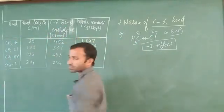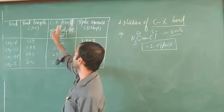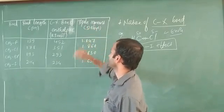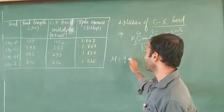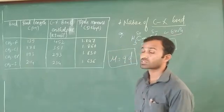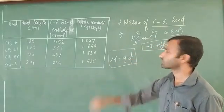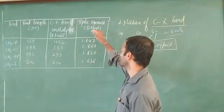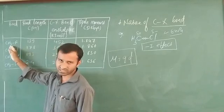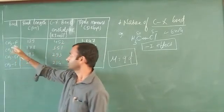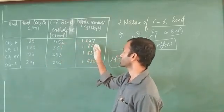Now let's look at the tabular column. The first column is the bond, the second is bond length in picometers (pm, which is 10⁻¹² meters), the third is bond enthalpy in kJ/mol, and the fourth is dipole moment (μ = q × d, the product of charge and distance). For CH3F (fluoromethane, common name methyl fluoride), the bond length is 139 pm, bond enthalpy is 452 kJ/mol, and dipole moment is 1.847 D.